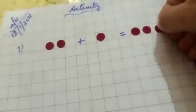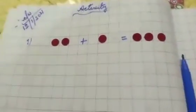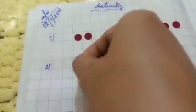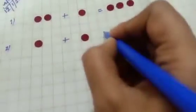Now number two. Here I am putting one bindi, here I am putting one bindi, then plus sign.